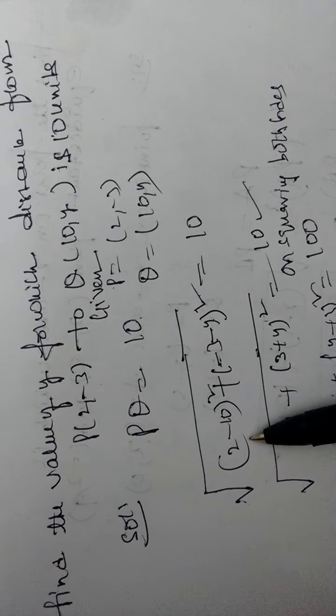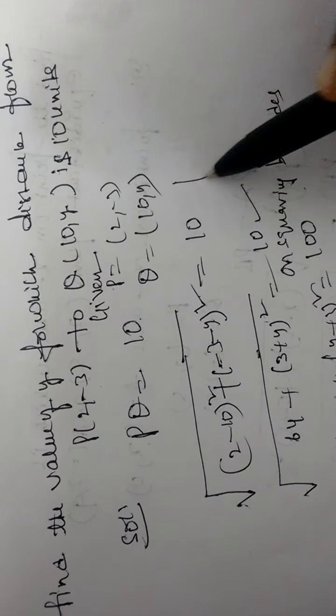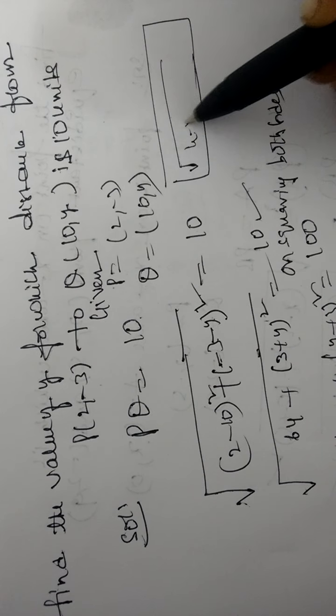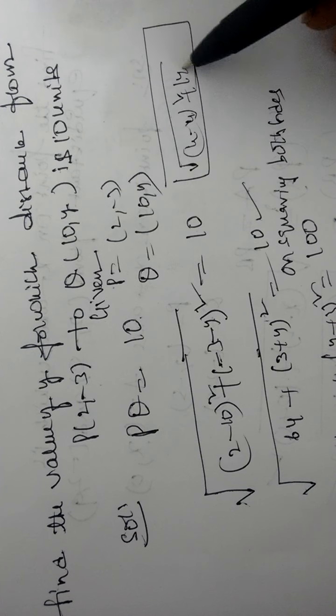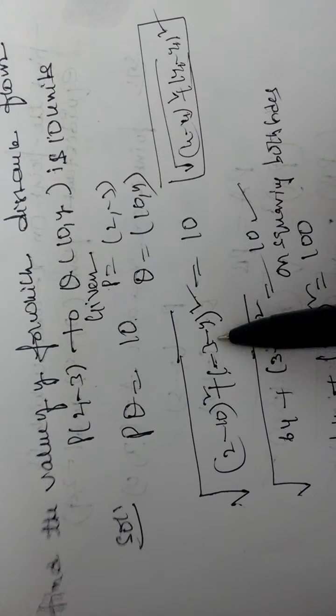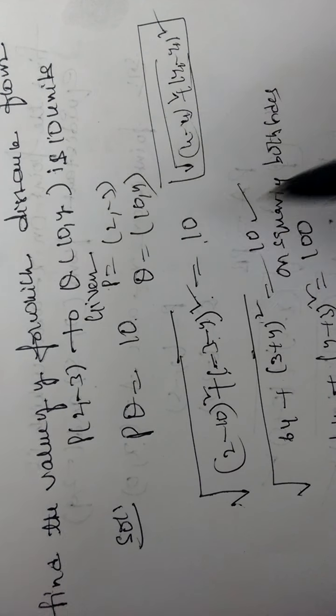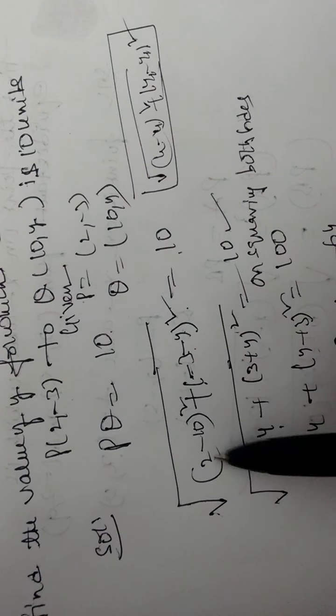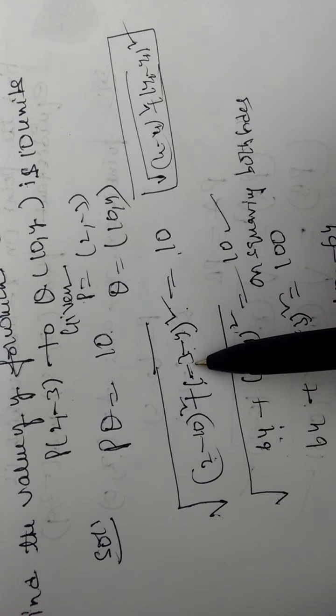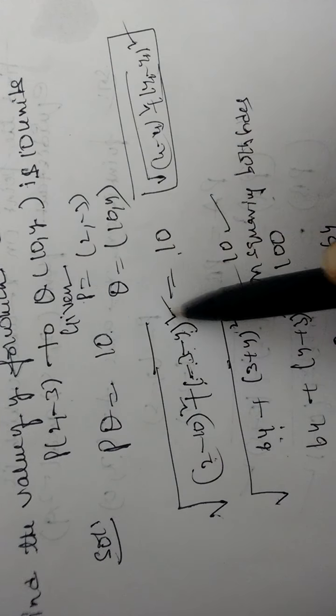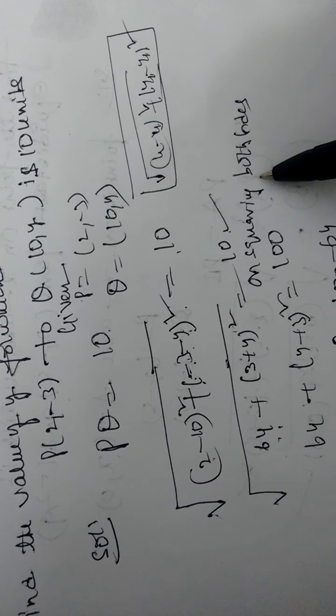So this PQ distance, we'll use distance formula. Distance formula application: under root (x2 minus x1) whole square plus (y2 minus y1) whole square. 2 minus 10, minus 3 minus y whole square equals 10 square. Under root: 2 minus 10 is minus 8. Minus 8 square is 64. Plus y. Minus square plus y. 10 square.